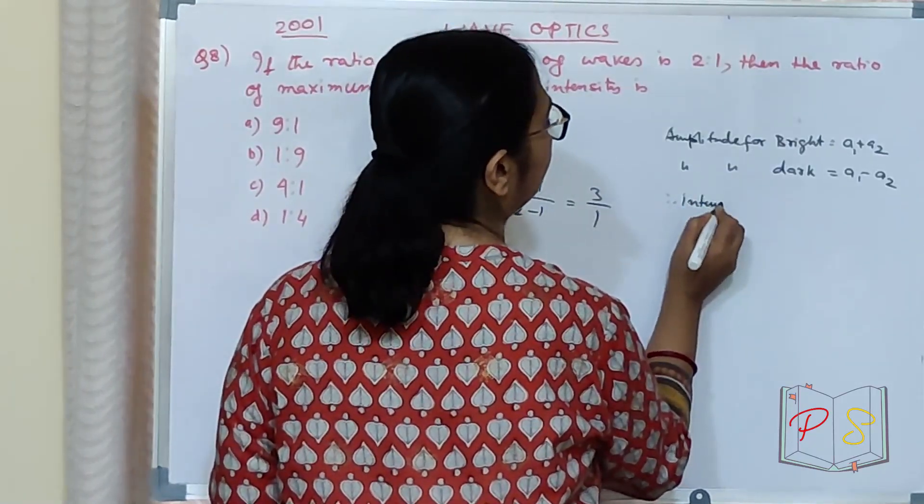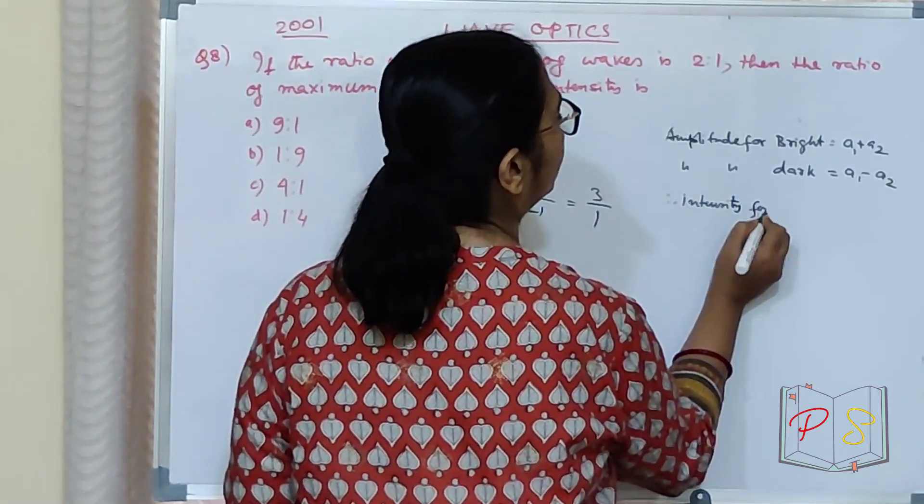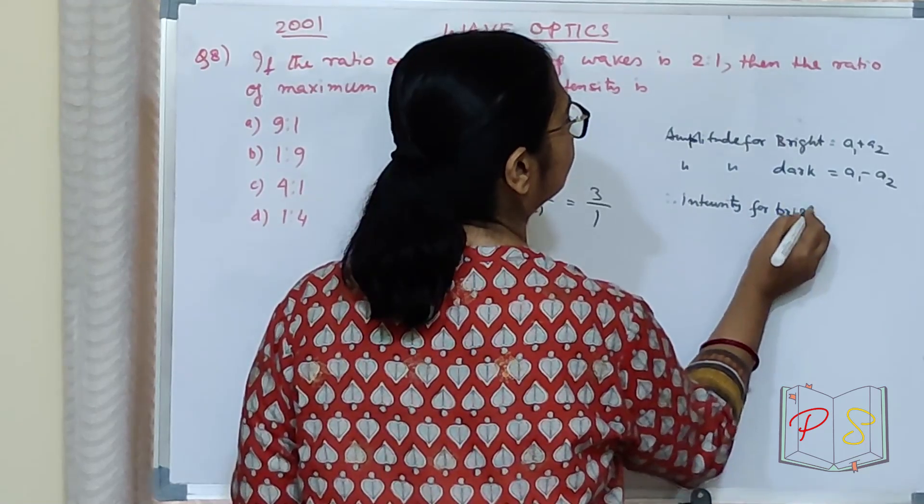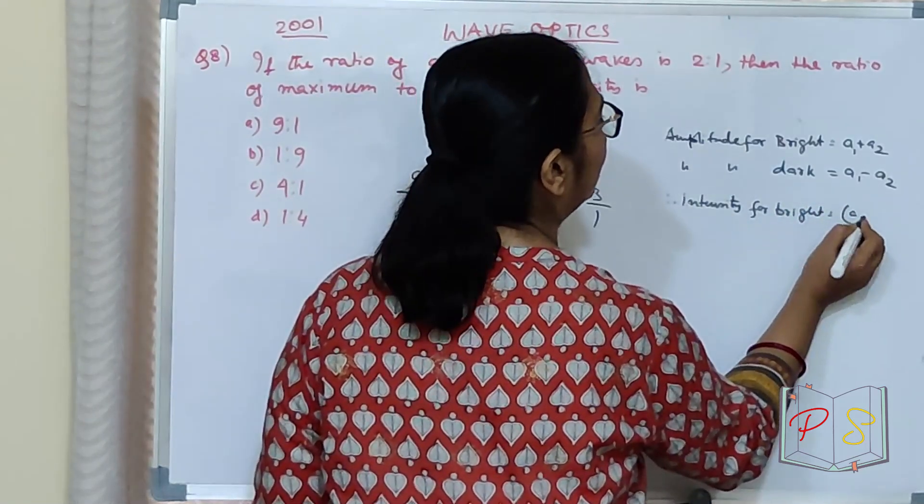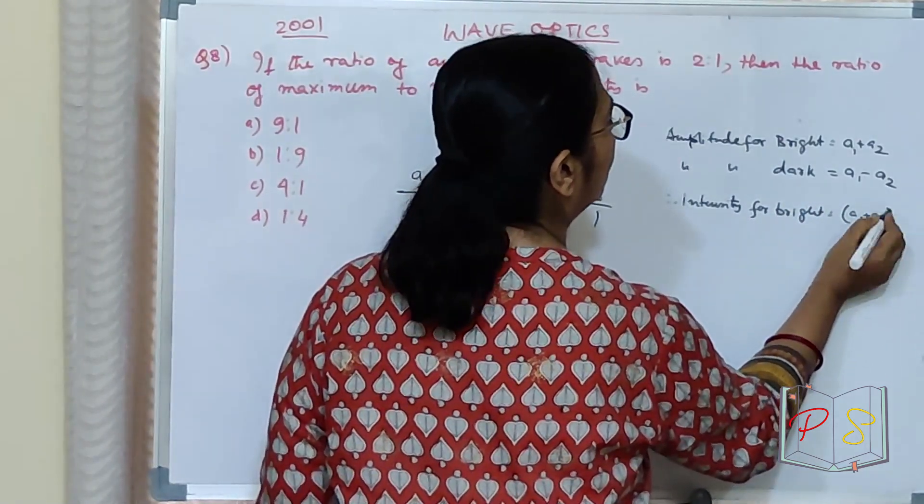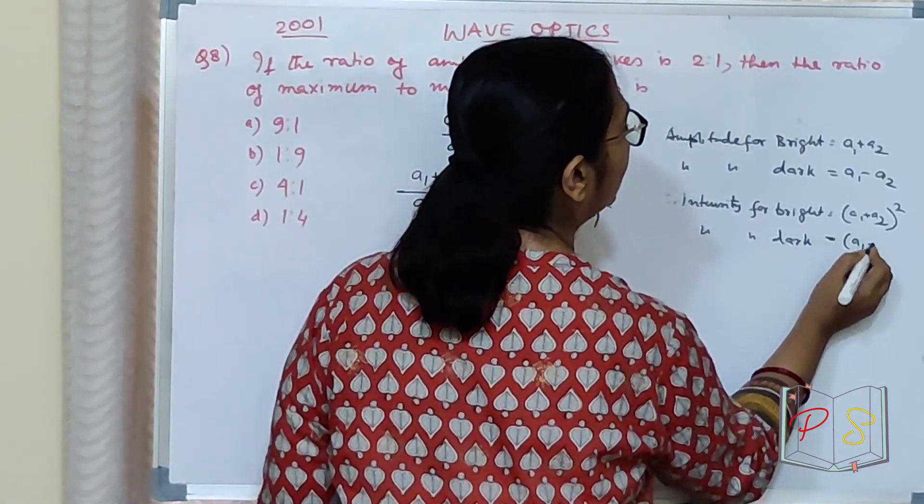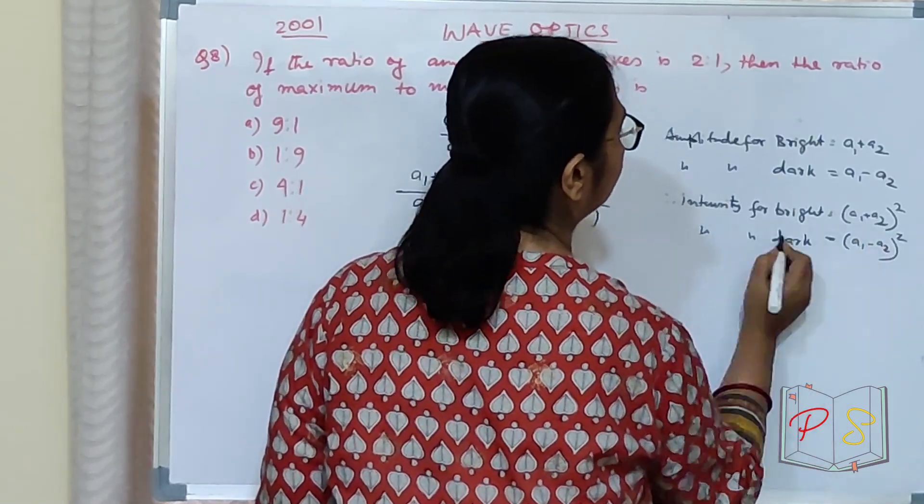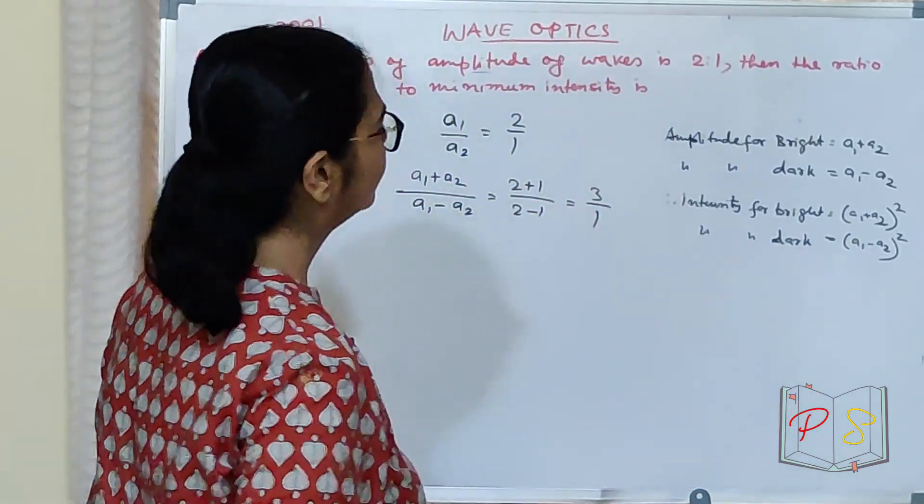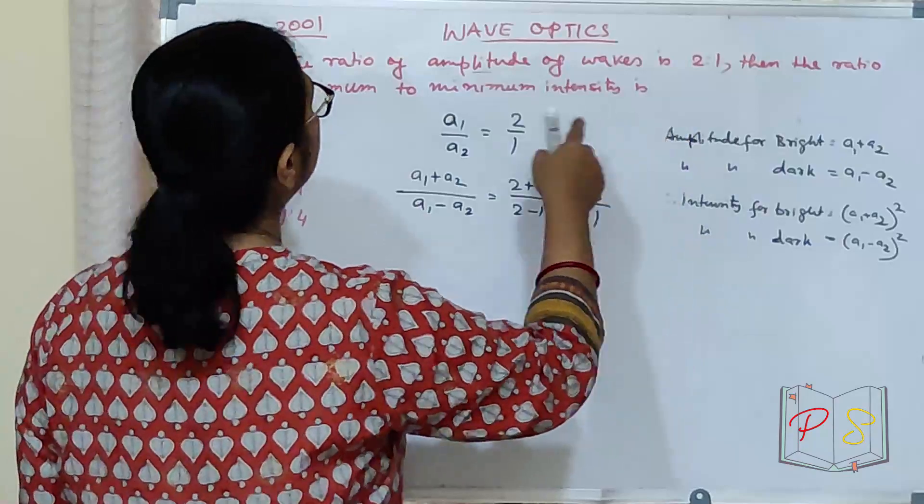Therefore, intensity for bright, A squared. Therefore, intensity for bright equal to A1 plus A2 ka whole square. Clear?